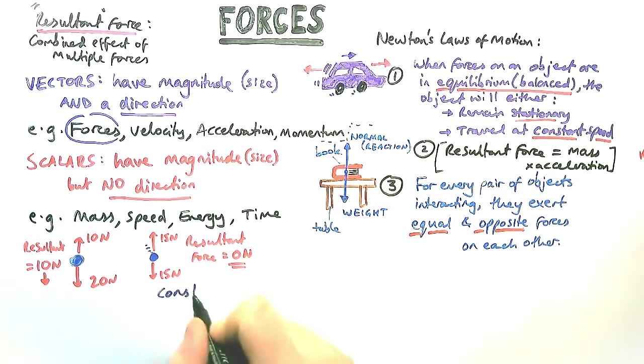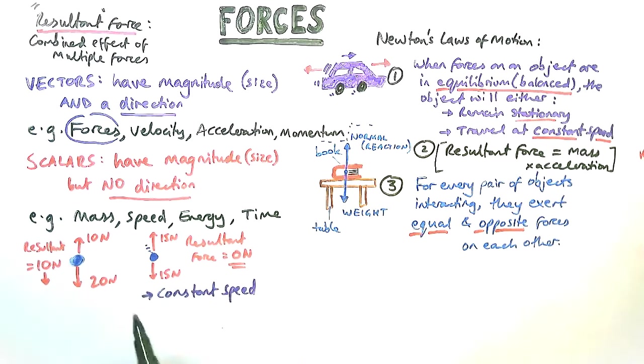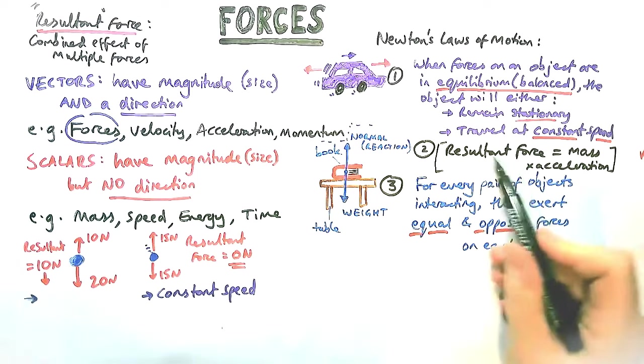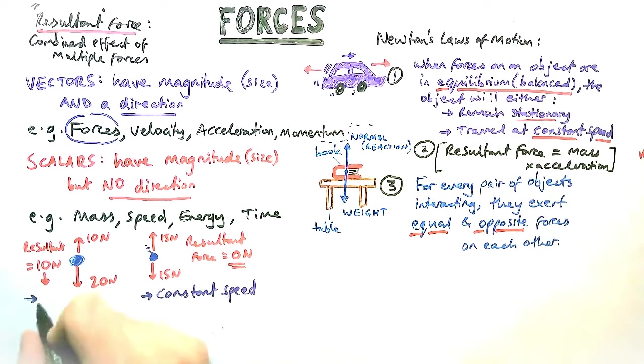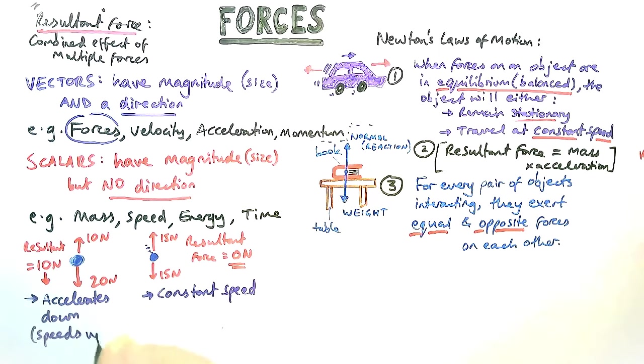For that object, if it's already moving, then we say it travels at a constant speed because the forces are balanced, or the resultant force is 0. This one here on the left, however, would be accelerating because there is a resultant force. The resultant force is downwards, so it accelerates or speeds up in the downwards direction.